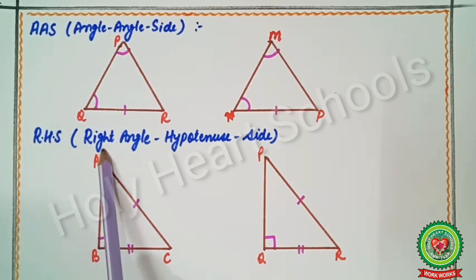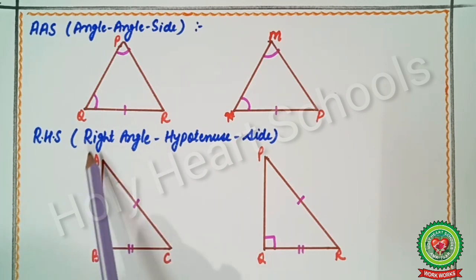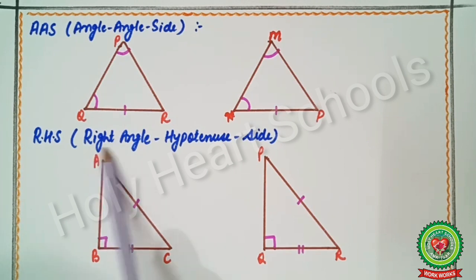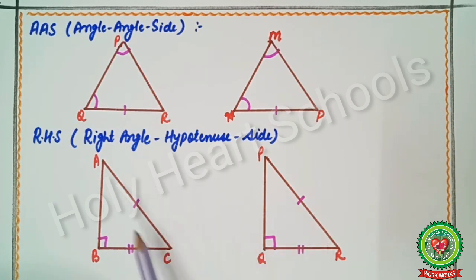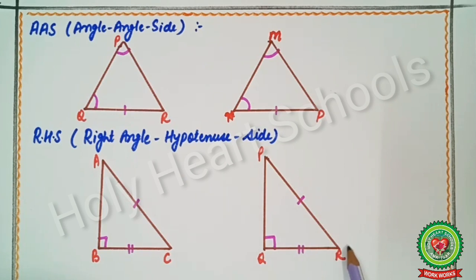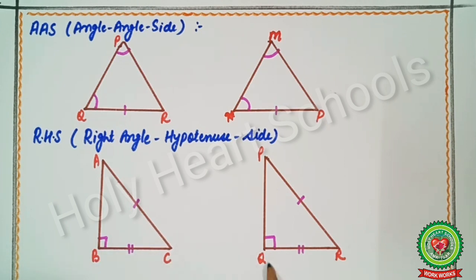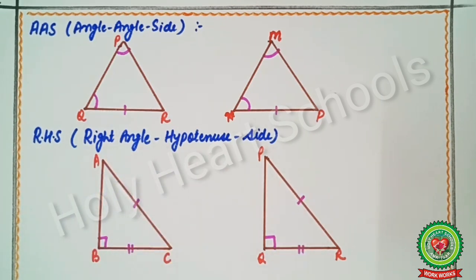Next is RHS — Right angle Hypotenuse Side. This applies only to right-angled triangles where one angle is 90°. Angle B = angle Q (both 90°). The hypotenuse is opposite to 90°, so AC = PR. Then any one side must be equal: BC = QR. With these three conditions, we can apply the RHS test.